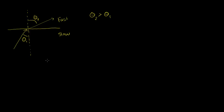Now what I want to figure out in this video is: is there some angle, depending on the two substances that the light travels in, where if this incident angle is big enough — because we know the refraction angle is always bigger than the incident angle when moving from a slow to a fast medium — is there some angle theta 3 where the refracted angle is going to be 90 degrees?